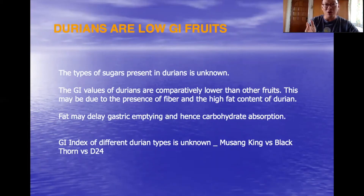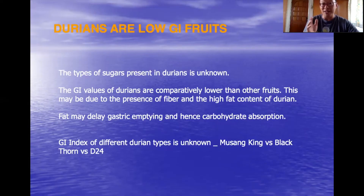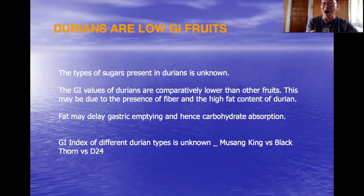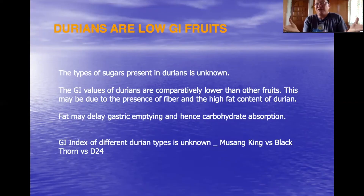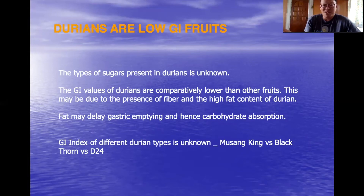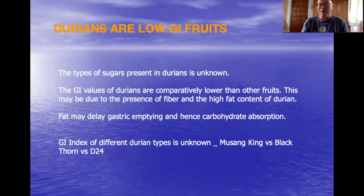What can we conclude? First, the types of sugar present in durians are unknown as noted in the study. The GI values of durians are comparatively lower than the other tropical fruits studied. This may be due to the presence of fiber and high fat content in durian — fat may delay gastric emptying and hence carbohydrate digestion and absorption, leading to a lower GI index. Also, tropical fruits at various stages of ripeness may have different GI indices, and the GI index of different durian varieties — for instance Musang King versus Blackthorn or D24 — is unknown.